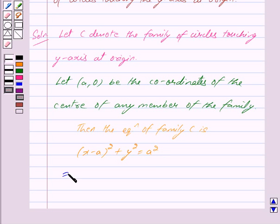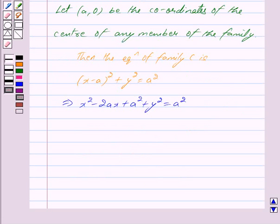This implies (x - a)² can be written as x² - 2ax + a² plus y² is equal to a². Canceling out a² from both sides we get,